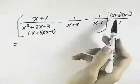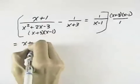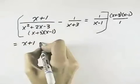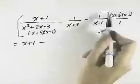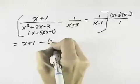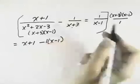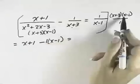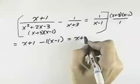On the left, both of those factors cancel, leaving just the x plus 1 for my first term. Then minus, here the x plus 3 cancels, leaving the x minus 1 times the 1 that was in the numerator, equals the x minus 1 cancels, leaving the x plus 3.